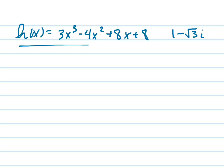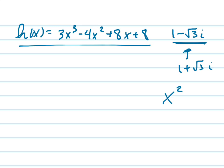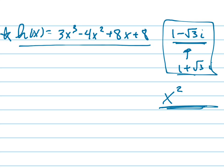It's telling us that we have a function h of x and that one of the zeros is given, and it's asking us to find the other zeros and maybe write it in factored form. So here's my quick overview: I'm going to use this zero and its conjugate, 1 plus root 3i — those are both zeros. I'm going to find a quadratic factor of h of x using a cool little trick, and then do long division to find the next factor.